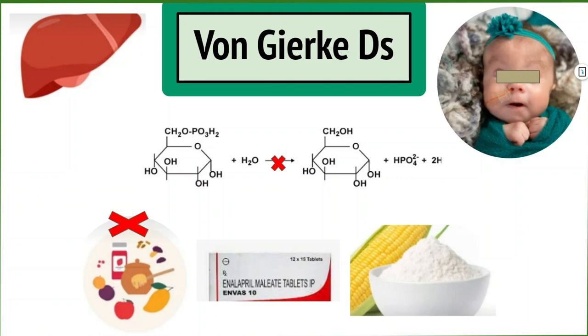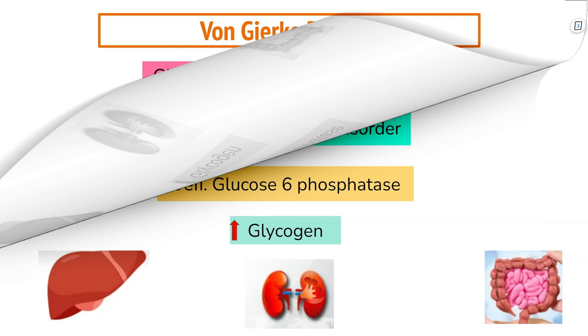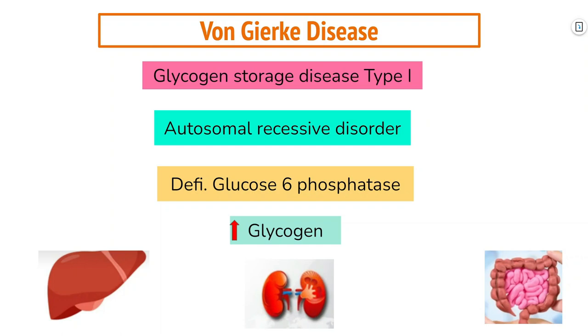Hi friends, Dr. Dria here. Welcome to another video where today we are going over the topic Von Gierke disease. It is also known as glycogen storage disease type 1 or glucose-6-phosphatase deficiency. It is an inherited autosomal recessive disorder caused by deficiency of the glucose-6-phosphatase enzyme and buildup of glycogen in certain tissues, especially liver, kidney, and small intestines.